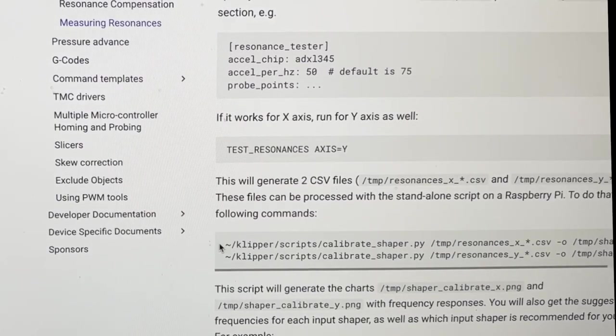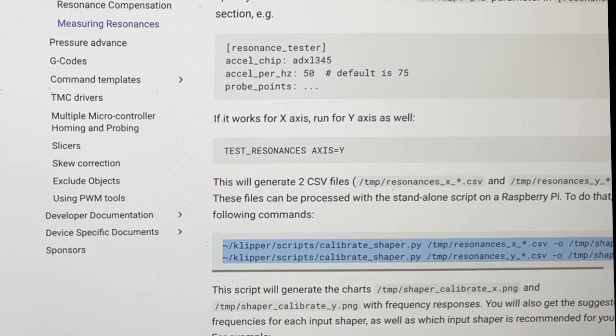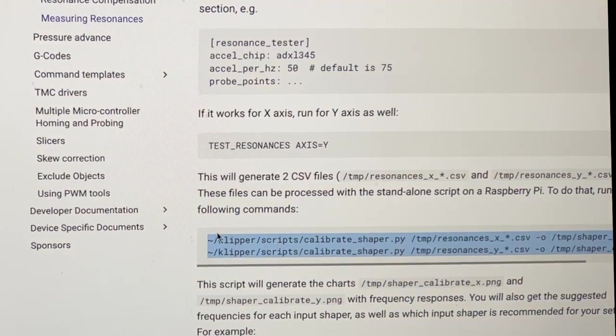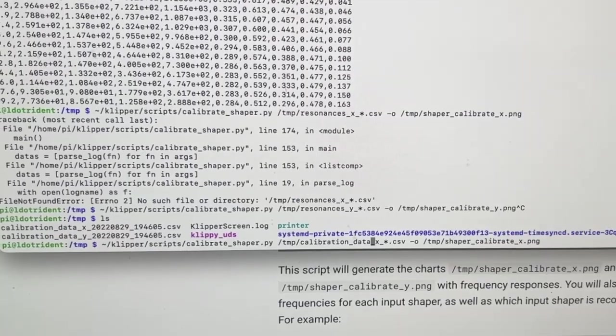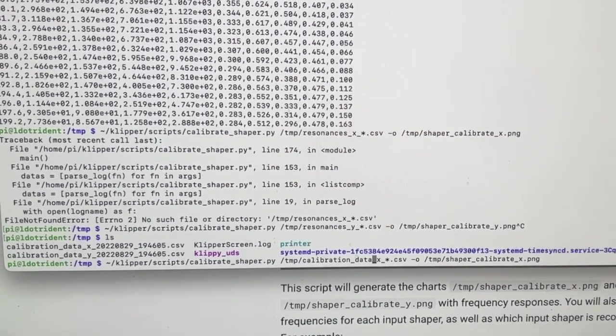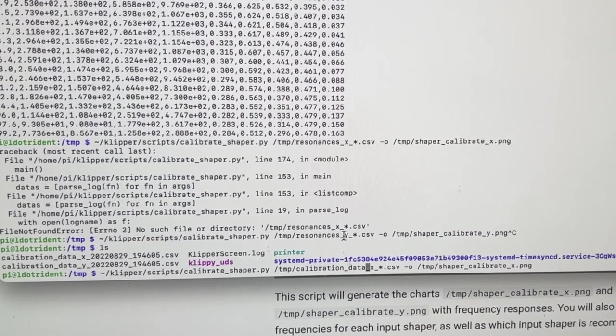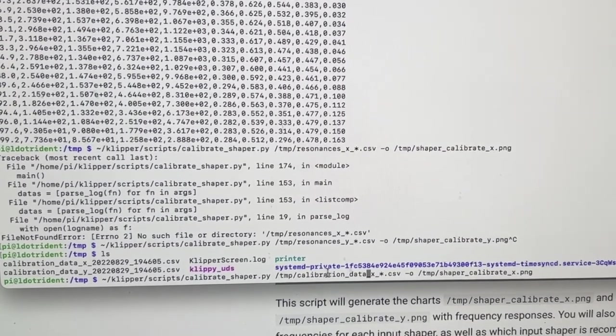Now if we want to get a chart view of those we can go to the measuring resonances page from Klipper and we can copy these two commands here. Okay I went ahead and changed the name of the file because they were expecting this resonances Y but it's actually called calibration data.